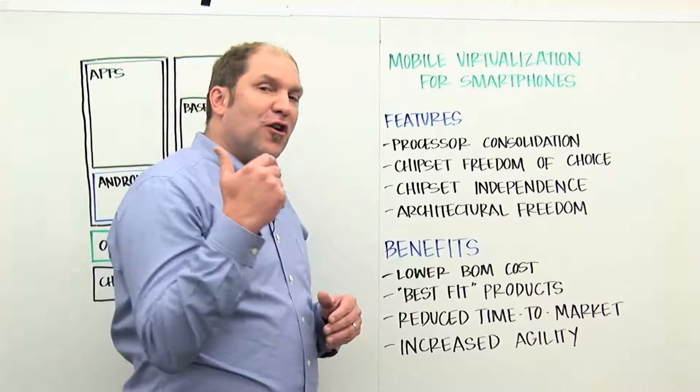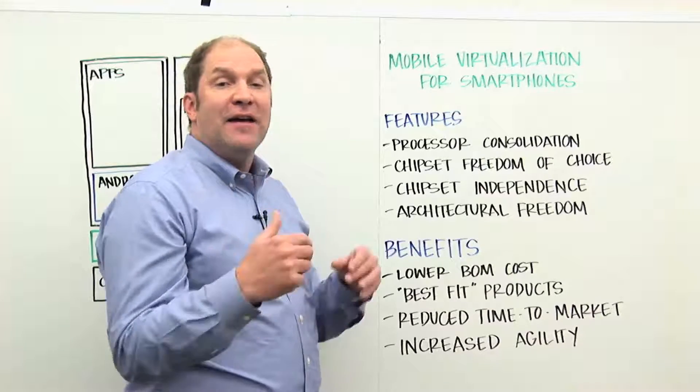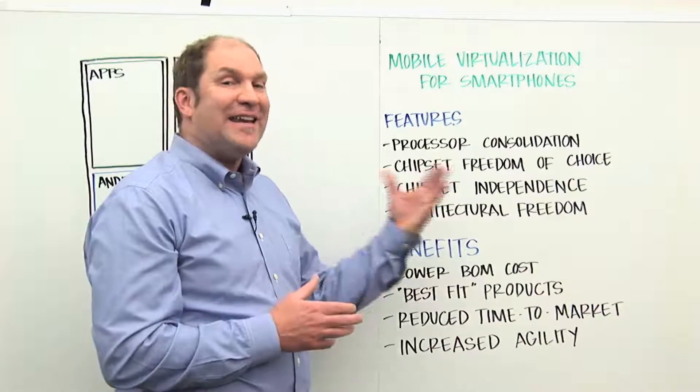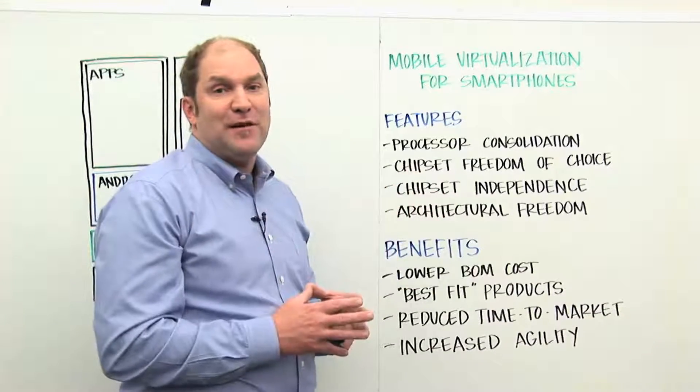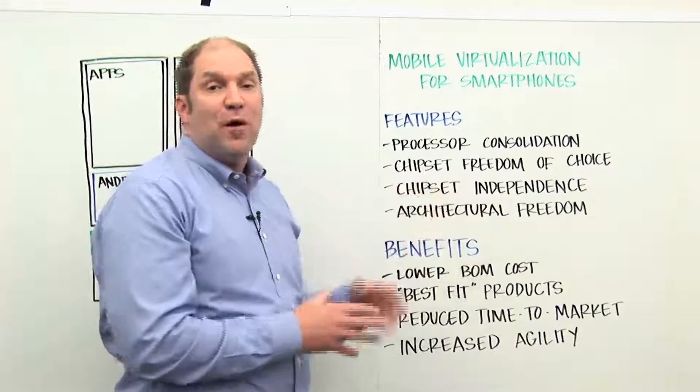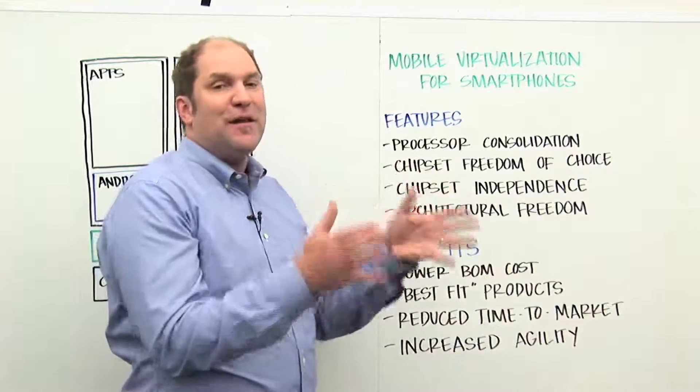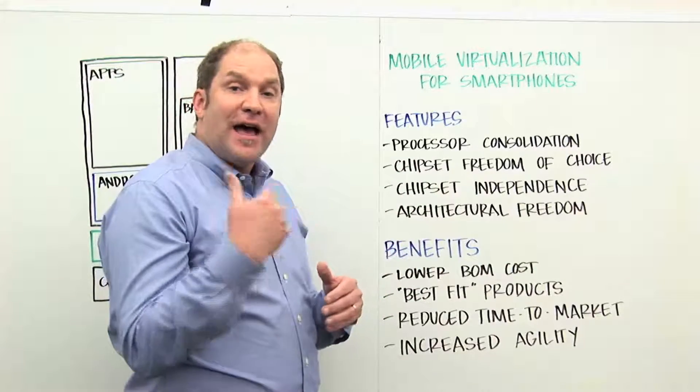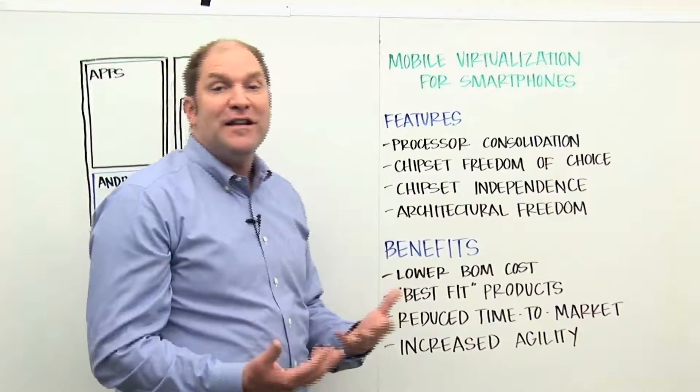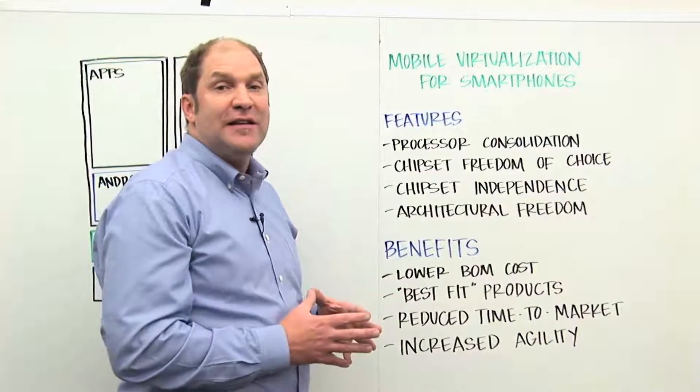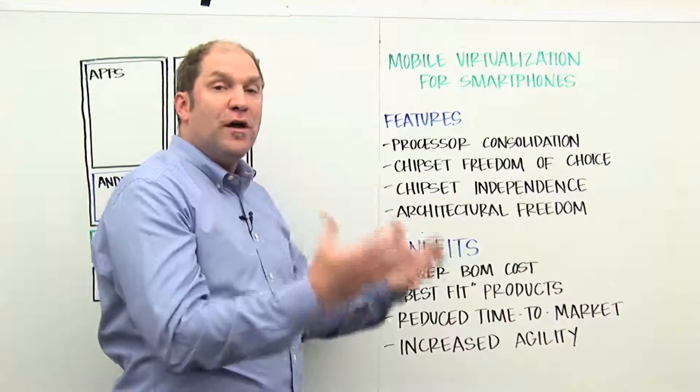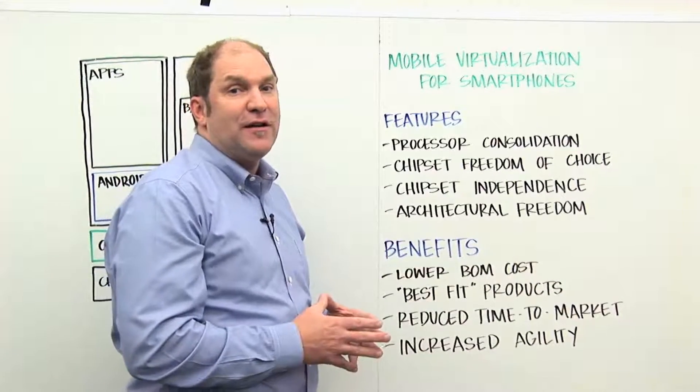So you can take your mass market smartphone and you can add another virtual machine on the same hardware that provides a second instance of the application operating system dedicated to a user's work use of their mobile device, for example, and kept separate and isolated from the environment in which they accomplish their personal use of their mobile phone. So it's about more than just bill of materials cost savings, although that is really the critical benefit that enables this whole new market segment, the mass market smartphone.